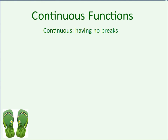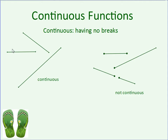Continuous means having no breaks. So if you have a line or a graph with absolutely no breaks in it, you have a continuous function. And it's really easy to see that lines that extend forever in both directions, whether they be linear or exponential, are always continuous.